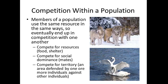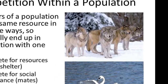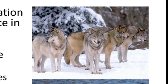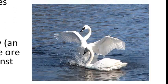Within a population there is competition, because they all need the same resources. They compete for food, shelter, and mates. Some species, like wolves, are very territorial — they defend their territory where they have food and shelter against nearby wolf packs. Swans are an example of species that mate for life; once a male and female pair up, they remain socially monogamous, so there is competition for mates in swan populations.